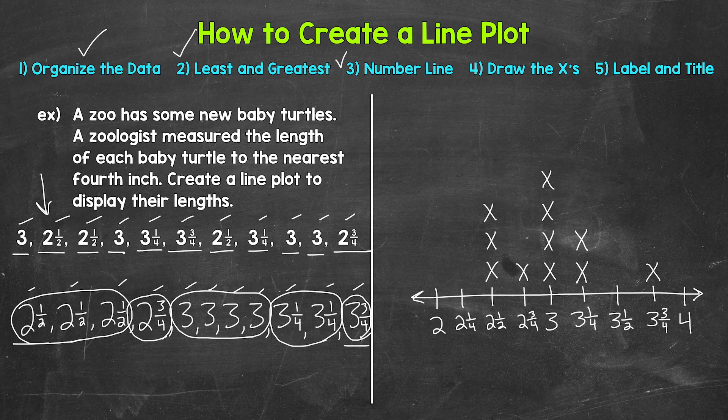We can double check: we have 11 turtle lengths, so we should have 11 X's — and we do. All of the X's are basically the same size, the stacks are straight, and the X's are lined up, meaning all of the first X's start at the same point and are lined up with each other across. The second X's are lined up as well, and so on. So we are done with drawing the X's.